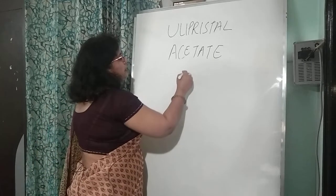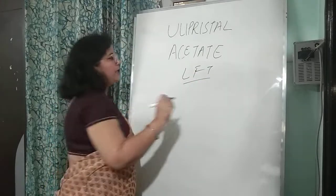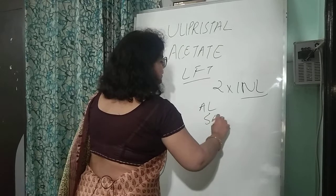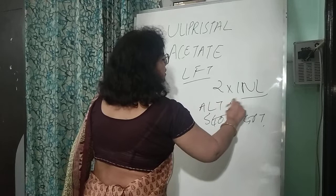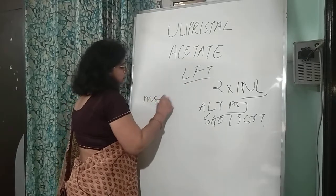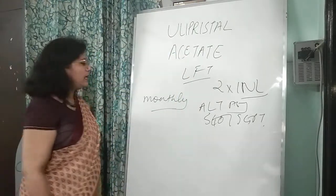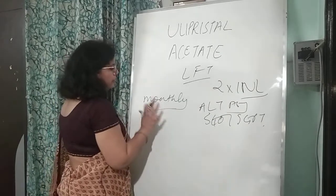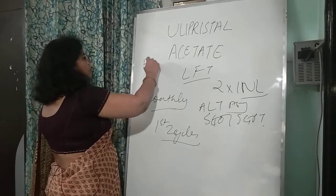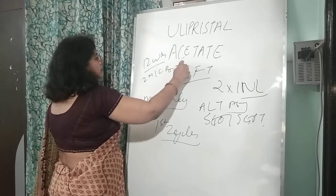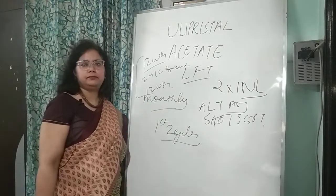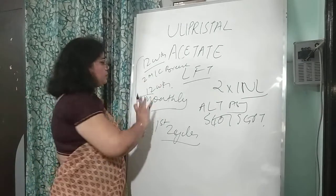When initiating ulipristal therapy, you must first do LFT before starting. If a woman has ALT or AST levels two times the upper normal limit, you will not initiate treatment. LFT must be repeated monthly during the first two cycles — each 12-week cycle with a two menstrual cycle break.